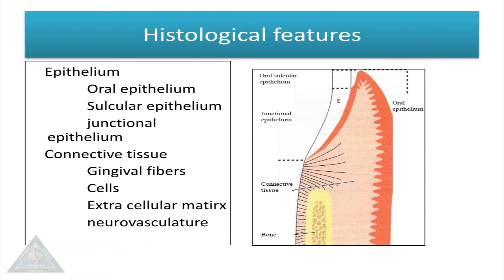Histologically, gingiva comprises of epithelium and connective tissue. Epithelium is of three types: oral or outer gingival epithelium, sulcular epithelium, and junctional epithelium. Gingival connective tissue comprises of fibres, cells, and extracellular matrix.